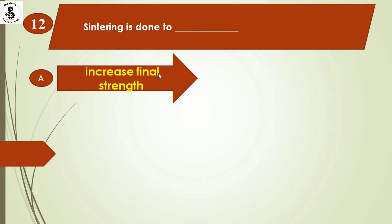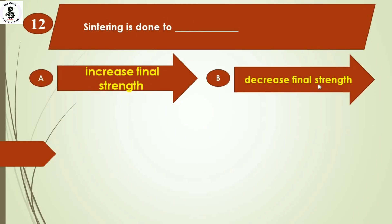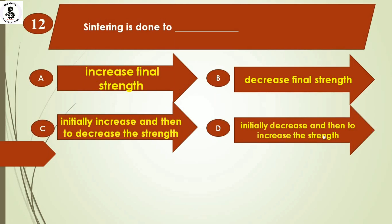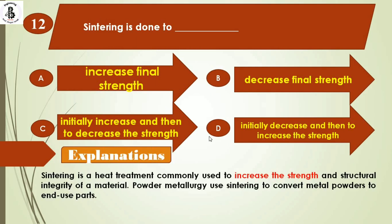The next question: sintering is done to option A) increase final strength, option B) decrease final strength, option C) initially increase then decrease strength, option D) initially decrease then increase strength. Sintering is a heat treatment used in powder metallurgy to increase the strength and structural integrity of materials, converting metal powders to end-use parts. The right answer is option A, increase final strength.